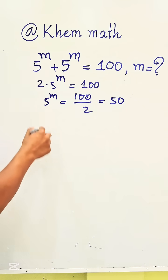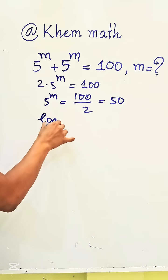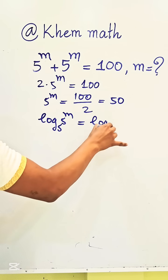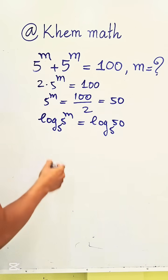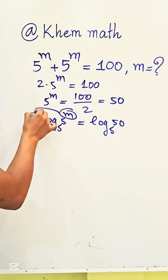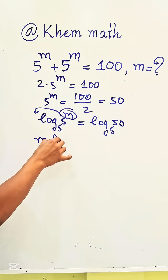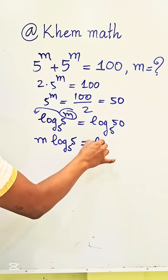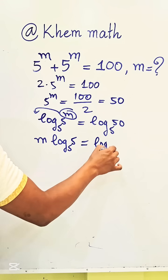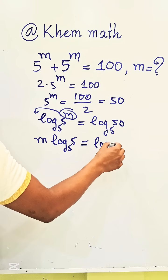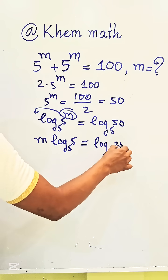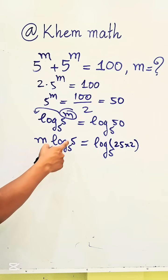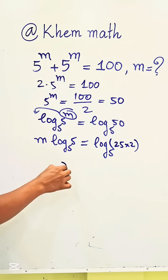We apply log base 5 to both sides of this equation, so we get log base 5 of 5 power m equals log base 5 of 50. Using the power rule, we bring m in front of the log, giving us m times log base 5 of 5. Since log base 5 of 5 equals 1, we get m equals log base 5 of 50.